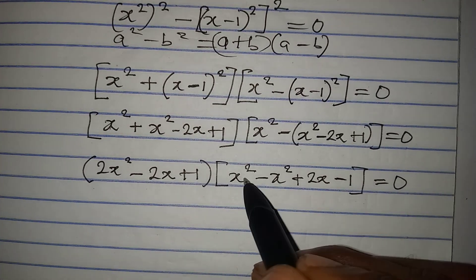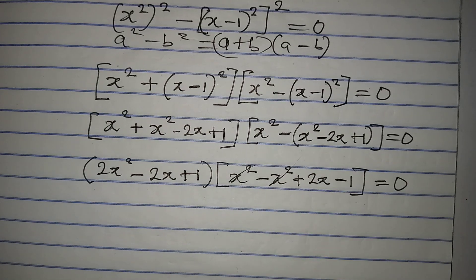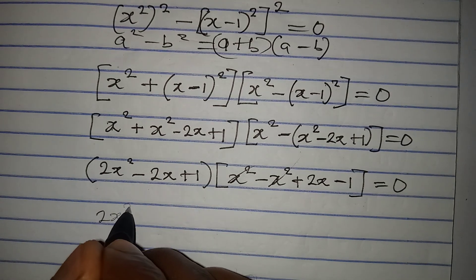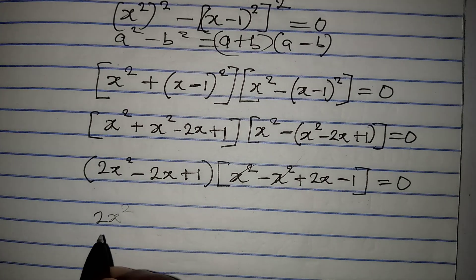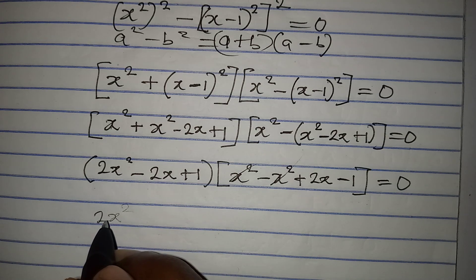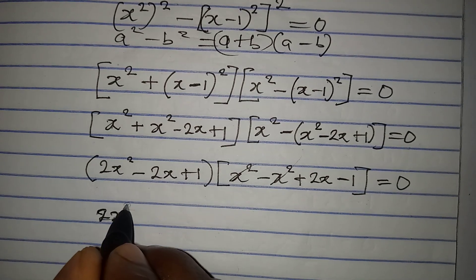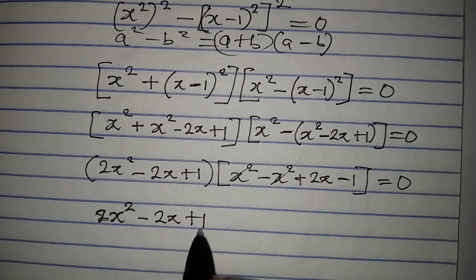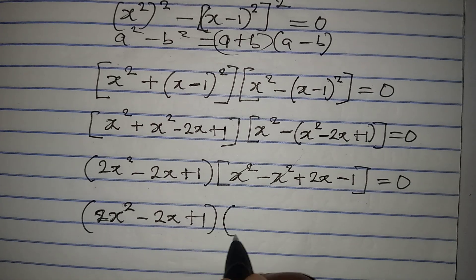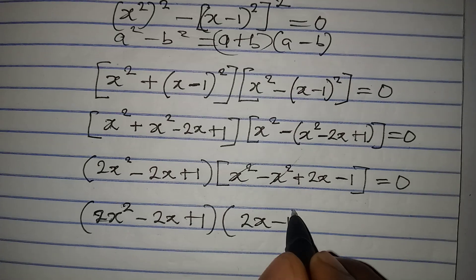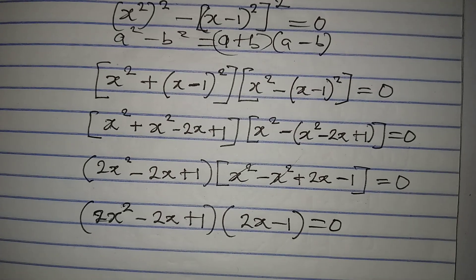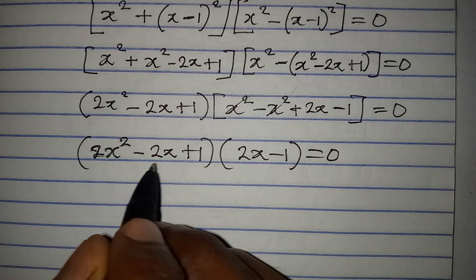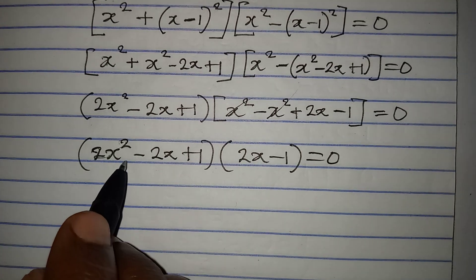The x squared terms are eliminated by subtraction, leaving us with (2x squared minus 2x plus 1) in the first bracket, and (2x minus 1) in the second bracket, both equal to 0. From here we apply the zero product rule, meaning either factor equals 0.